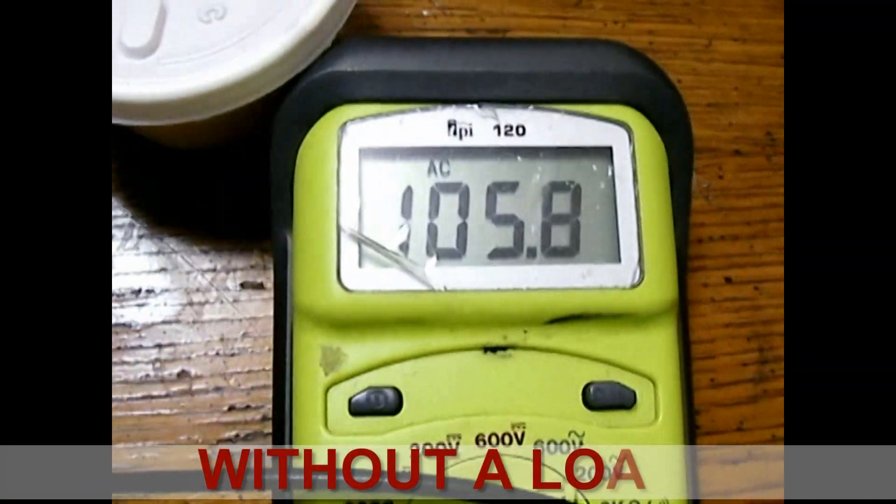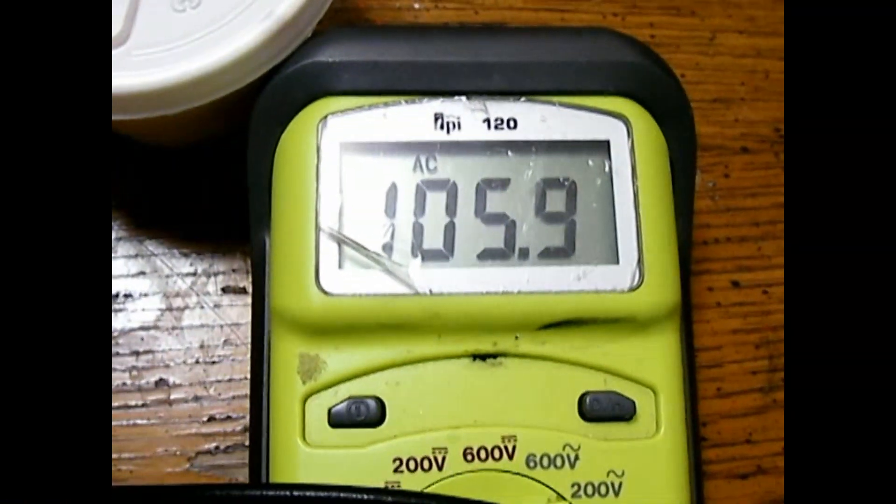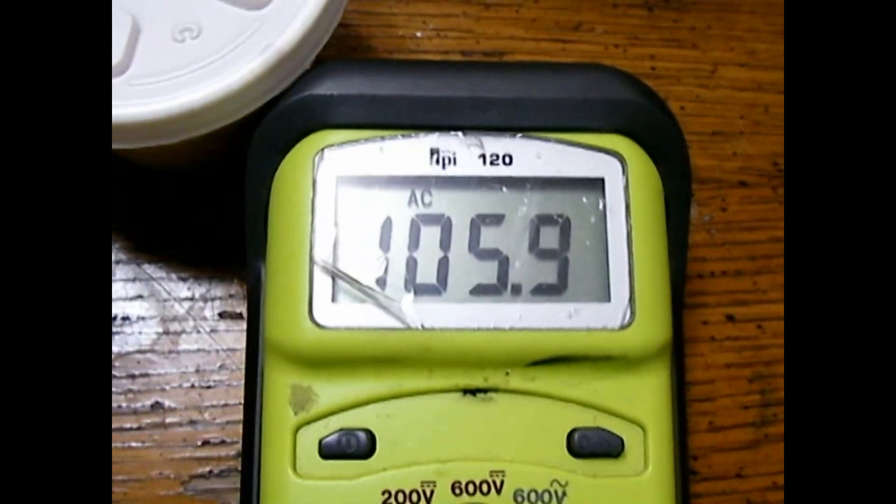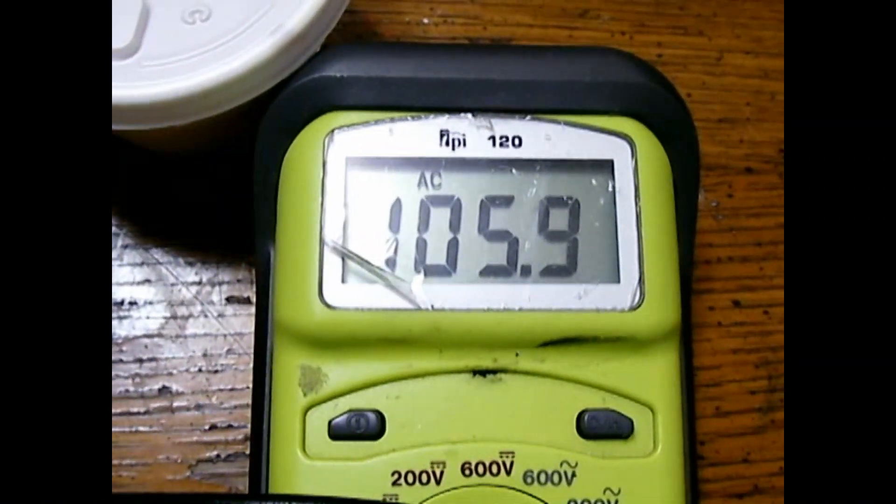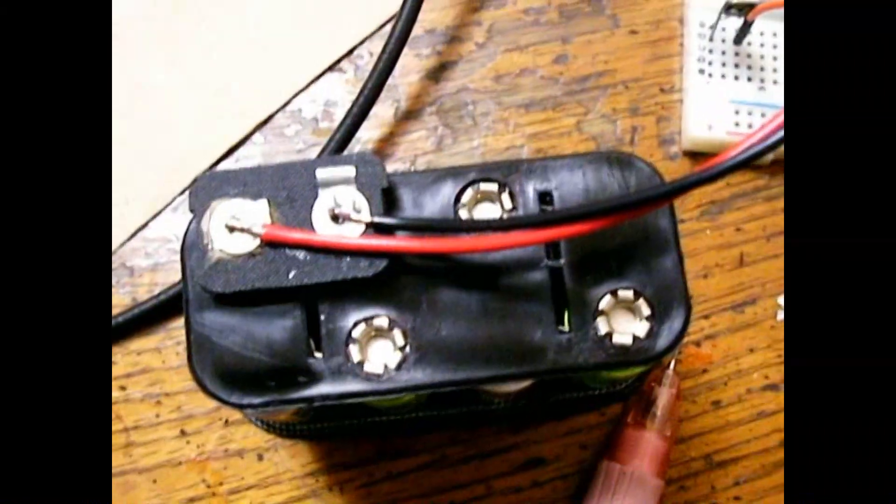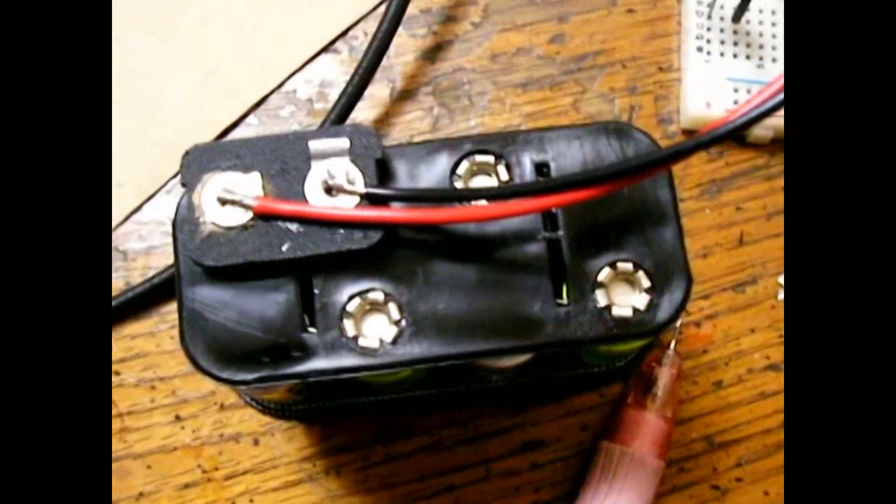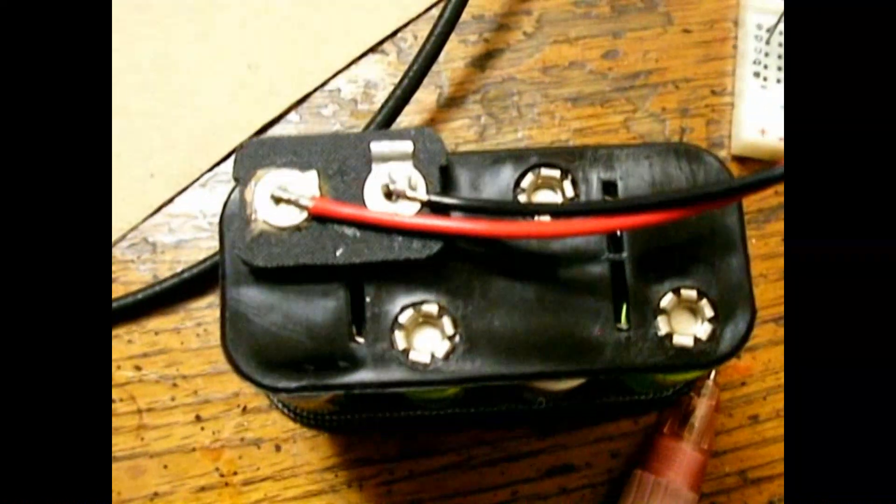This is what the voltage is like. Output is about... well, on a fully charged battery pack it's about 107 volts AC. There you go, it's at 105 right now off of this battery pack. I haven't tested yet how many milliamperes this circuit draws for each bulb.